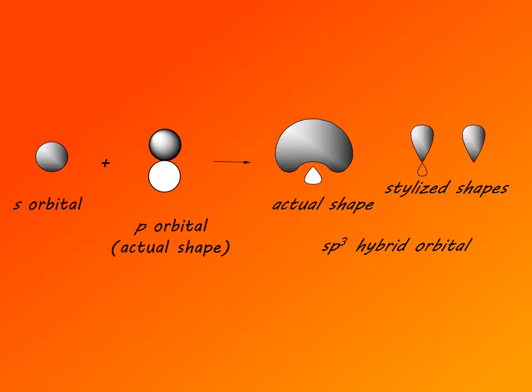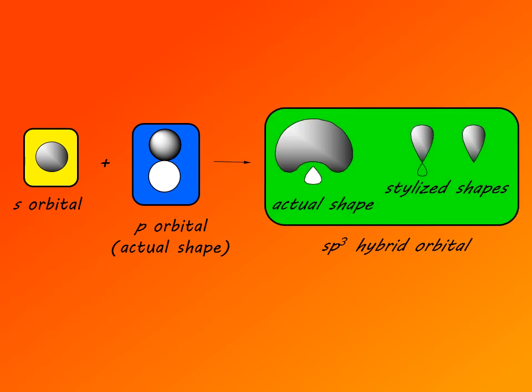Here is another description of hybridization. An s orbital combines with a p orbital — and these are the actual shapes. Before, we used stylized shapes to simplify. Here are the actual shapes of s and p orbitals. As they hybridize, this is the actual shape of a hybrid sp, sp2, or sp3 orbital. It is roughly spherical, very similar to an s orbital, but it has two lobes of opposite signs, just like a p orbital.